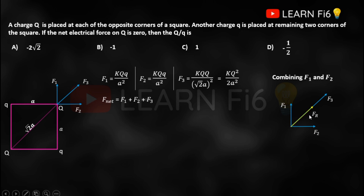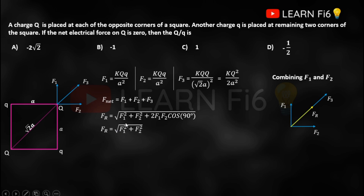Using the parallelogram law: Fr = √(F1² + F2² + 2·F1·F2·cos90°). The angle between F1 and F2 is 90°, so cos90° = 0, and that term vanishes. Since F1 = F2, we get Fr = √(2F1²) = √2·F1. Substituting F1 = kQq/a², the resultant of F1 and F2 is √2·kQq/a².